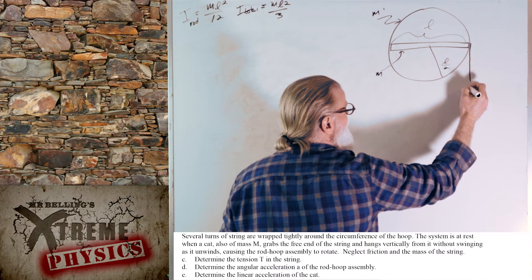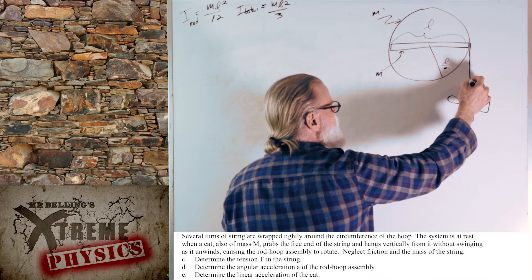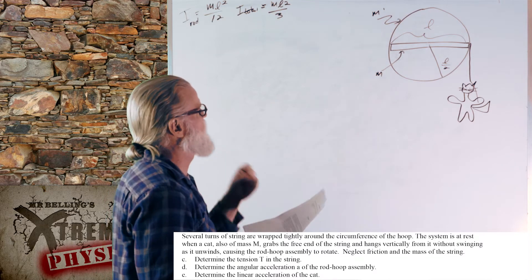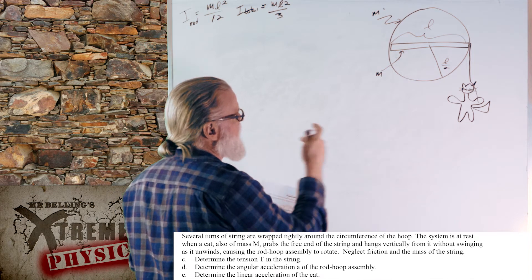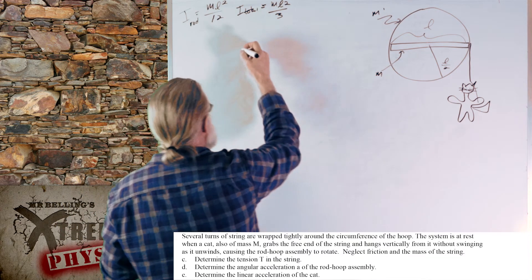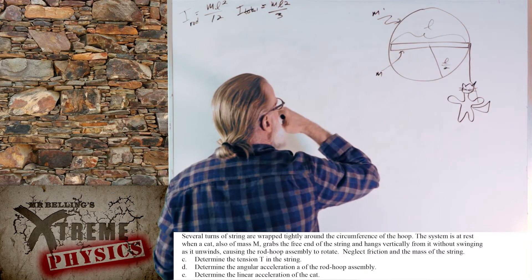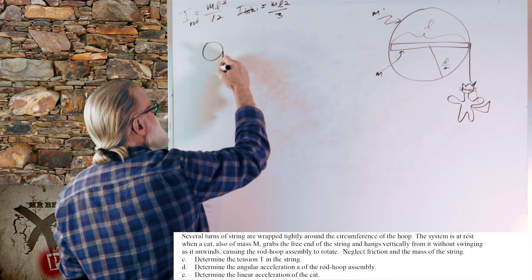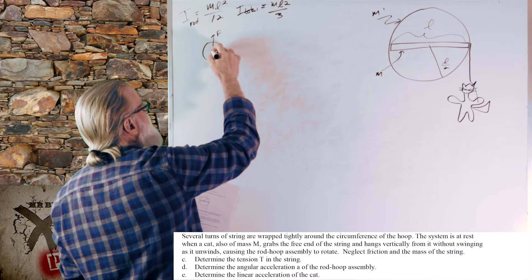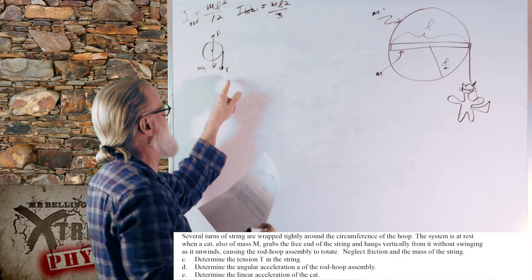We've got a string hanging down with the cat hanging by the paw. Let's look at the torque situation on the hoop. We have a tension force, the axle applying a force upward, and gravity downward. Rotating about the center, the only thing applying a torque is the tension. So the sum of torques about the center equals I total times alpha.